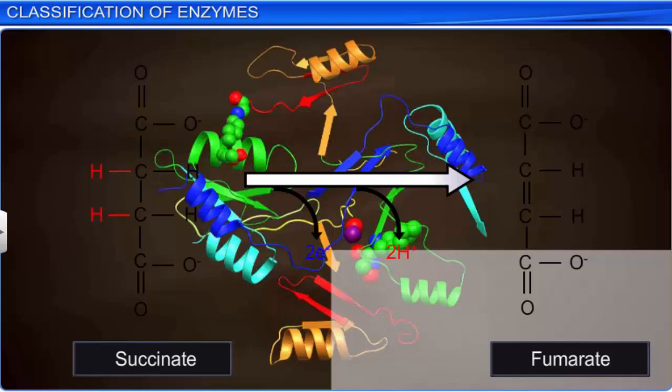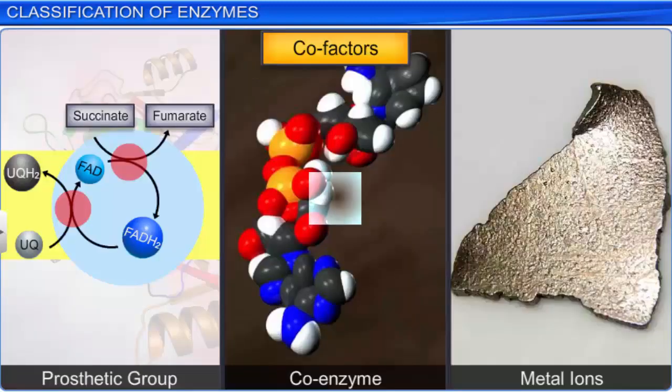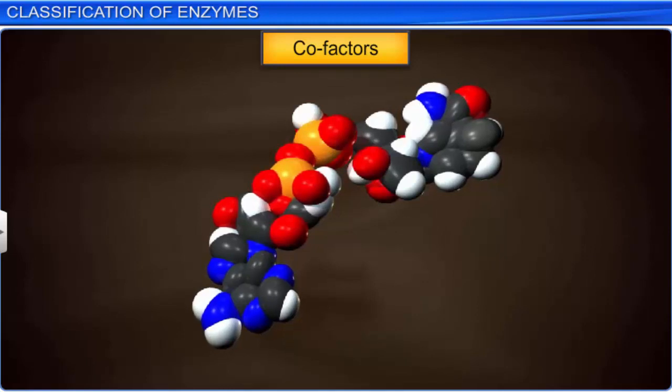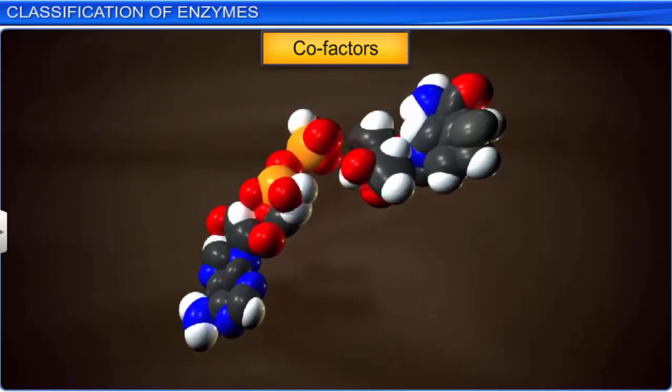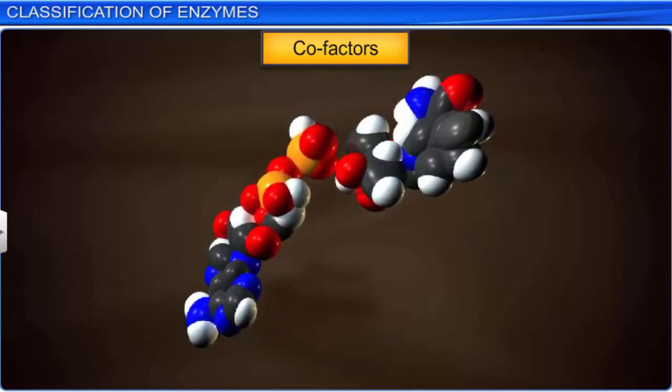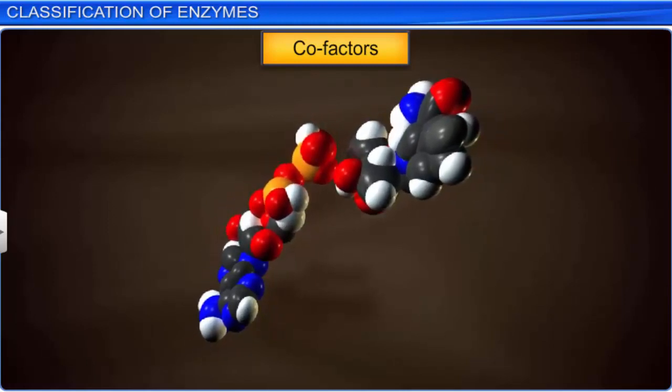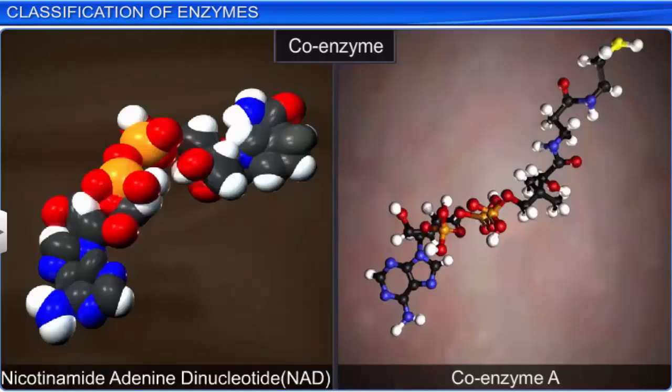Coenzymes are also organic compounds, which get bound to apoenzymes for a brief period during catalysis. In fact, coenzymes act as cofactors in a number of different enzymatic reactions. Common examples of coenzymes are NAD or nicotinamide adenine dinucleotide and coenzyme A.